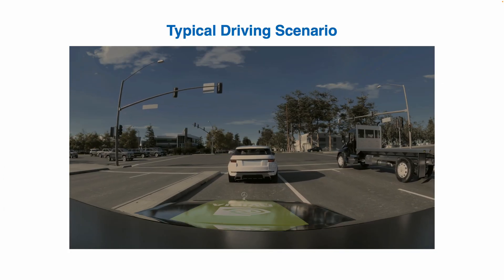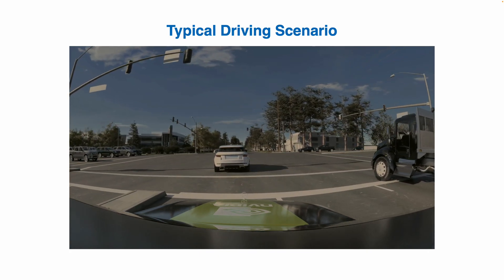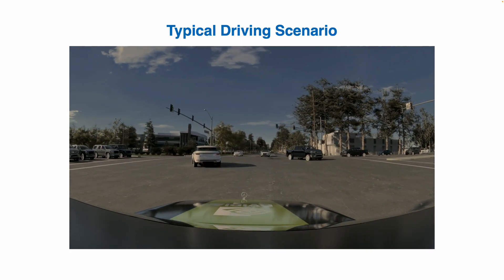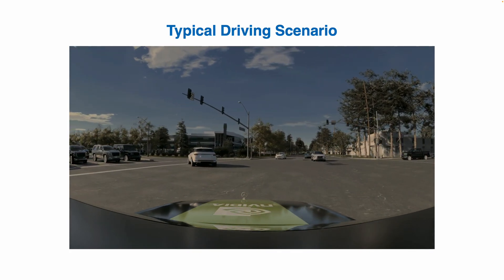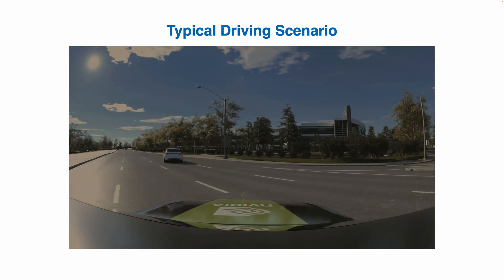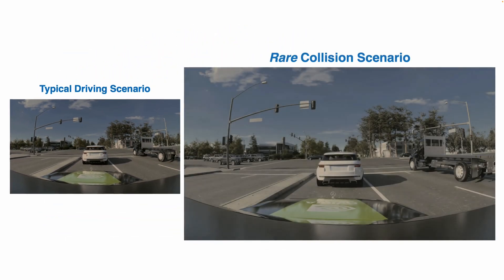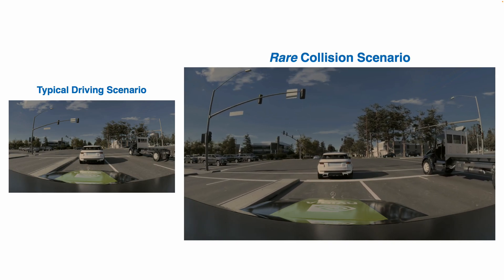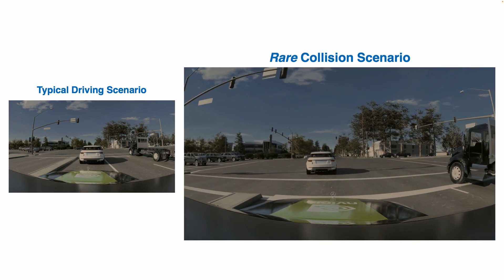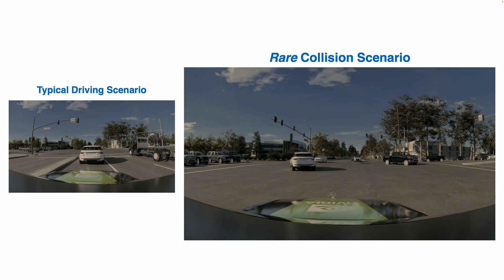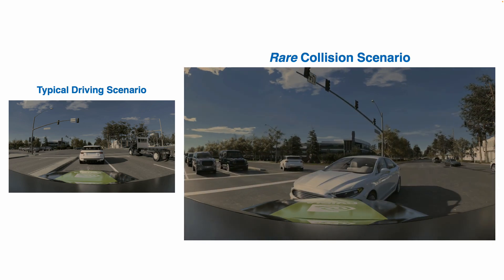Both the development and evaluation of autonomous vehicles leverage large, real-world datasets which are dominated by typical, everyday driving scenarios like the one shown here. However, the safety of AVs is determined by their ability to robustly handle complicated, near-collision scenarios that are rare in real-world driving.